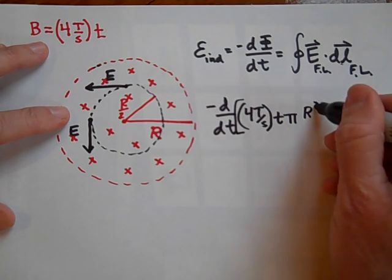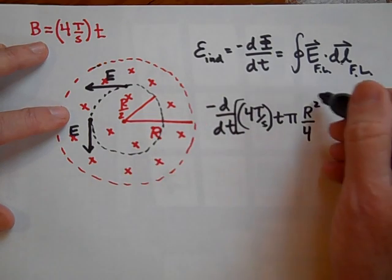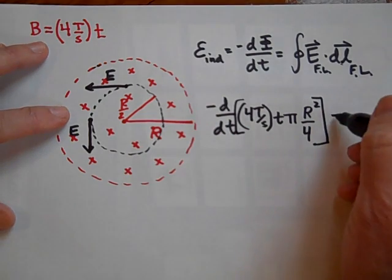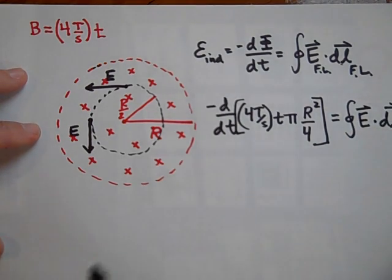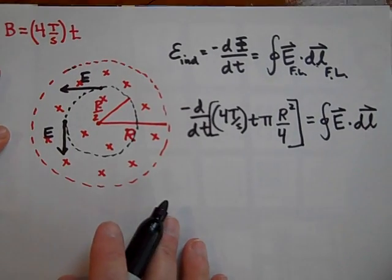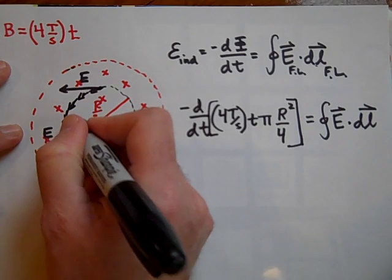The area is going to be pi times R squared over 4. Isn't that the area of this? And that's going to equal the closed loop integral of E dot dL. Let me show you some dL's.